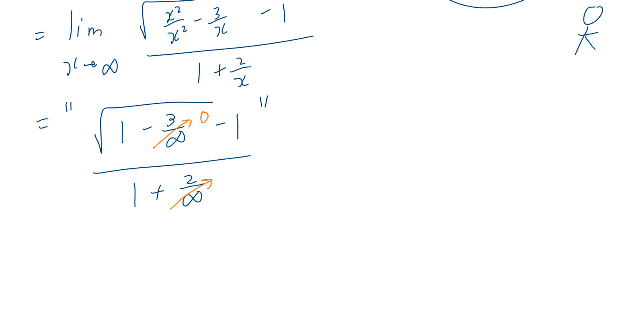3 divided by infinity or 2 divided by infinity is going to approach 0, which means when you work this out, this is going to give you 1 minus 1 divided by 1. And the final answer is going to be 0.